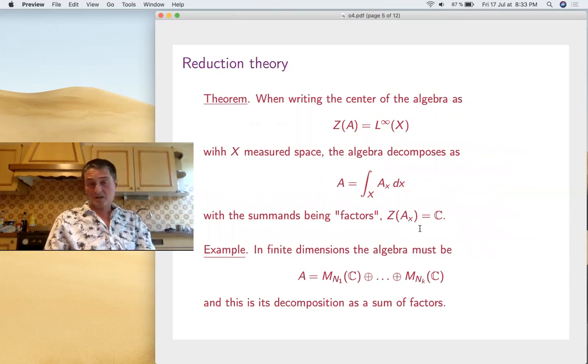Now, along the same lines, but a thousand times more complicated, is the reduction theory of John Von Neumann. So given our arbitrary Von Neumann algebra, let's look at the center, which is commutative. So that must be L^∞(X), with X a measured space. This is very powerful because what Von Neumann found is that the whole algebra decomposes as an integral of factors. Factors meaning the Von Neumann algebras that you get there, which must have a trivial center, right? Because you will kill the center.